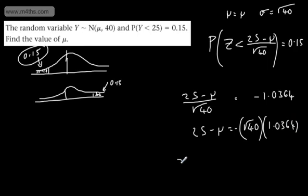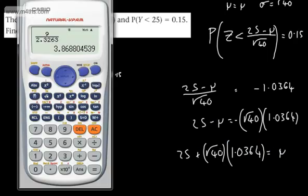So we can now say that 25 plus root 40 multiplied by the 1.0364 will be equal to, adding μ to both sides, this value right here. You can rearrange that however you see fit. So let's just whack that through a calculator.